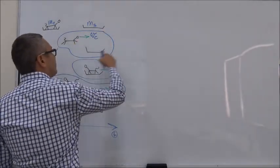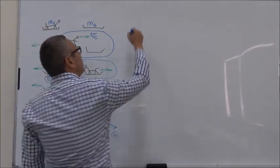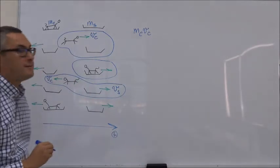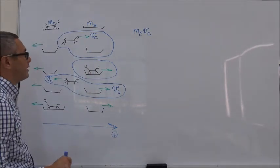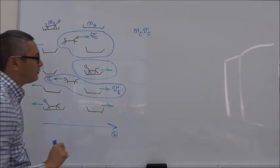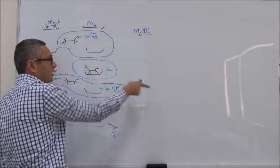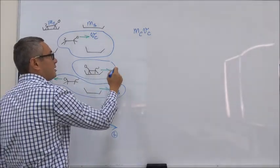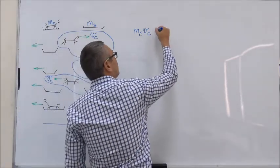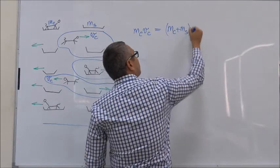Let's look at the initial state of the cat-and-second-sled system. The momentum of the system equals the mass of the cat times the velocity of the cat. The sled has no momentum because it's stationary. In the next state, the cat and the sled are moving together in this direction with some velocity — let's call that V0. So we can say that this momentum equals the mass of the cat plus the mass of the sled, times V0.